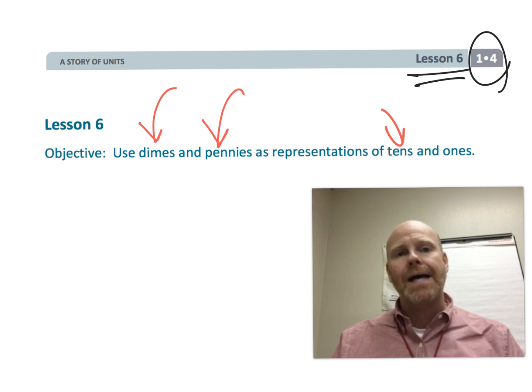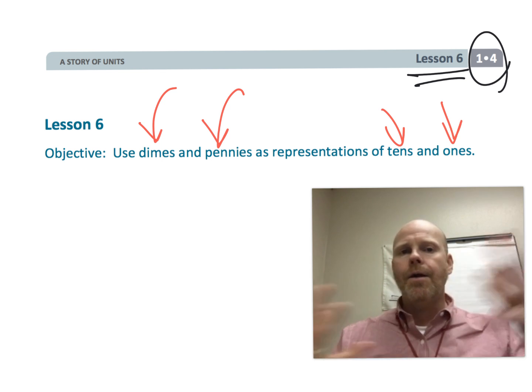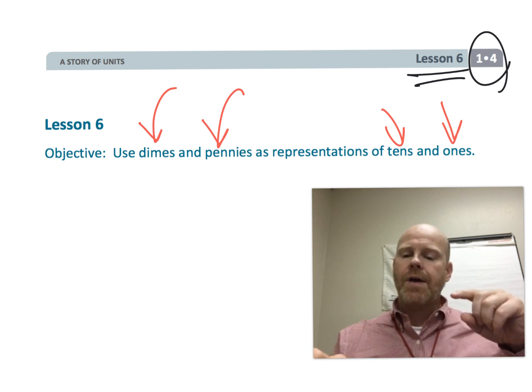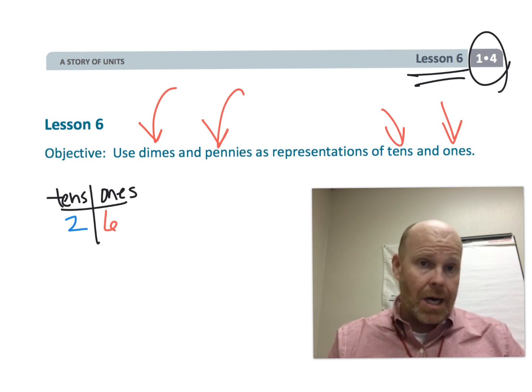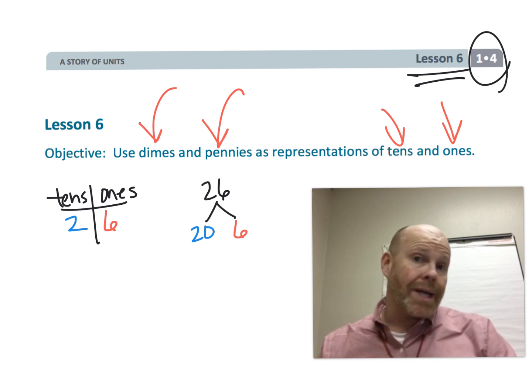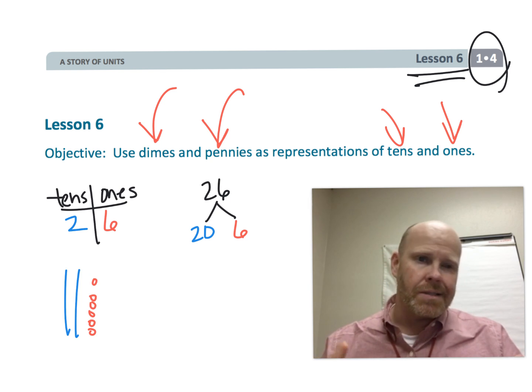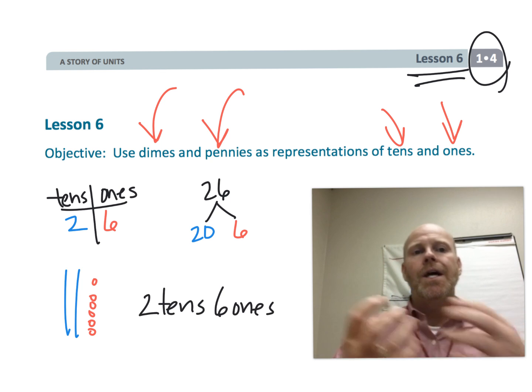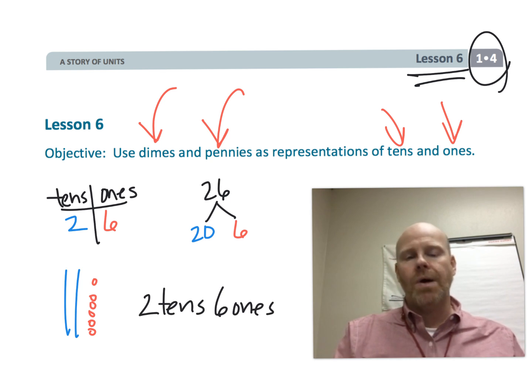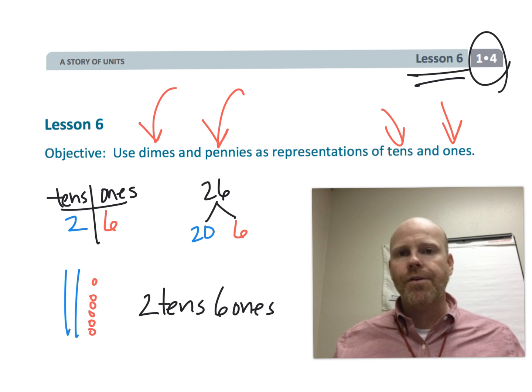So now what have we got so far? We've got, in no particular order, the place value chart, number bonds, the quick tens and quick ones, and the say 10 method: two tens and six ones. So we've got all these different representations.